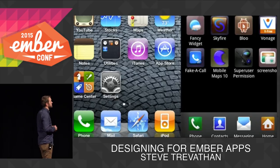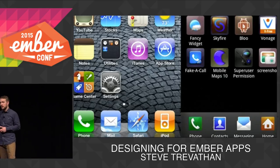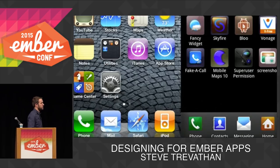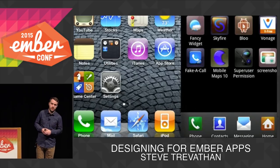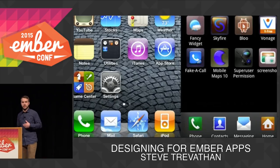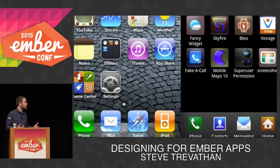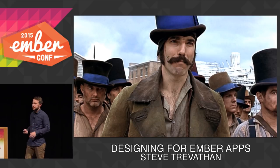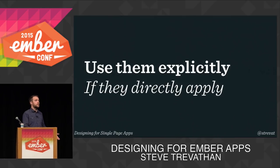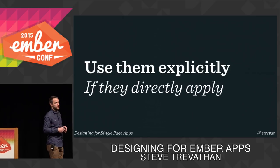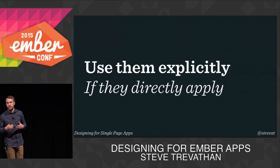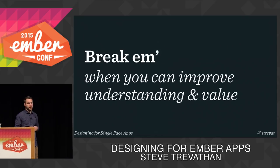This is an example of a direct copy that gets you sued — don't do that. Borrowing mental models is different from directly copying a competitor's solution. As I showed with Tinder and Messages, those aren't really competitors. Ultimately, you don't want to start any legal fights. Just try to understand the mental models and how they may apply to your experience. Use them explicitly if they directly apply — you don't necessarily need to redesign a radio button every time. But you want to break them where you can improve the understanding and value of your product.